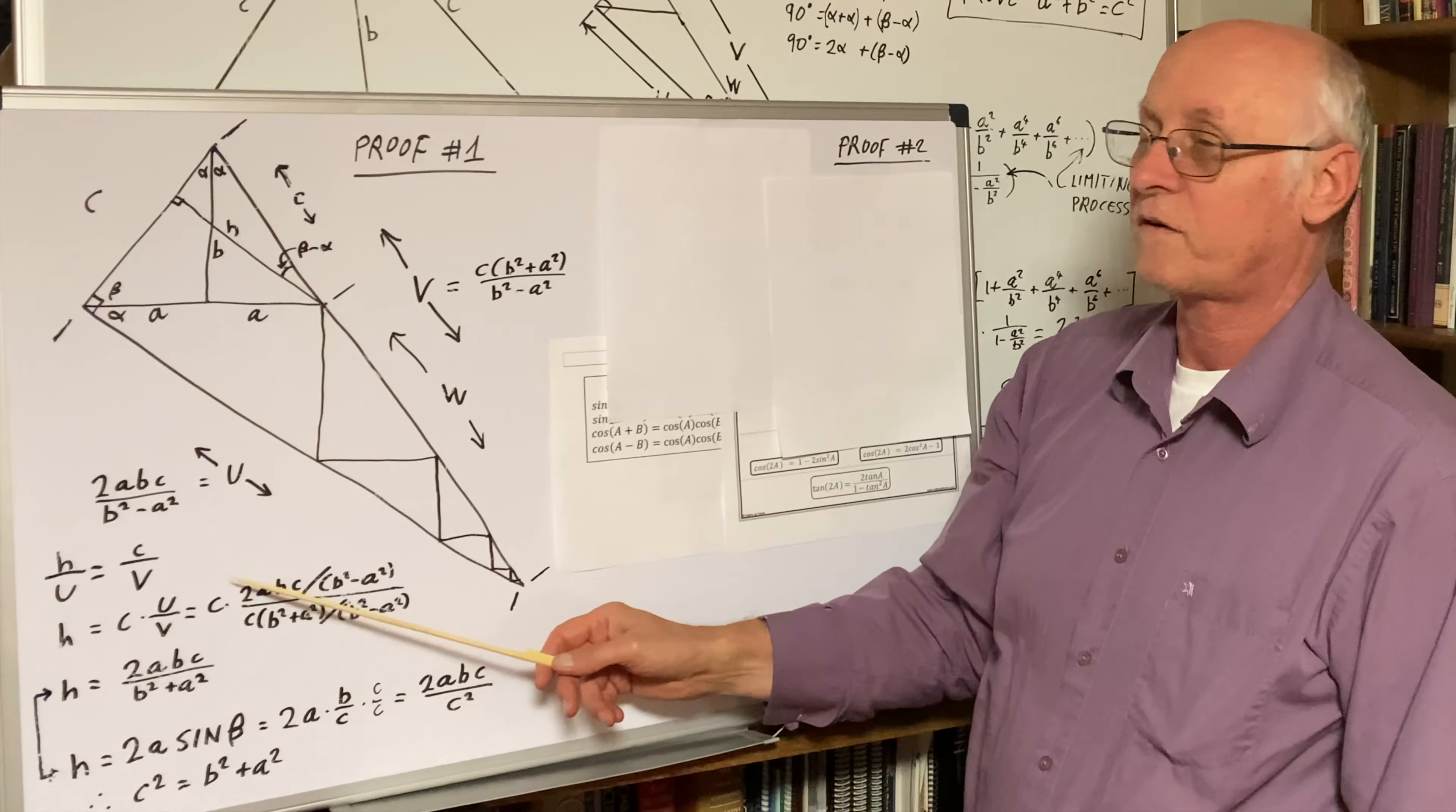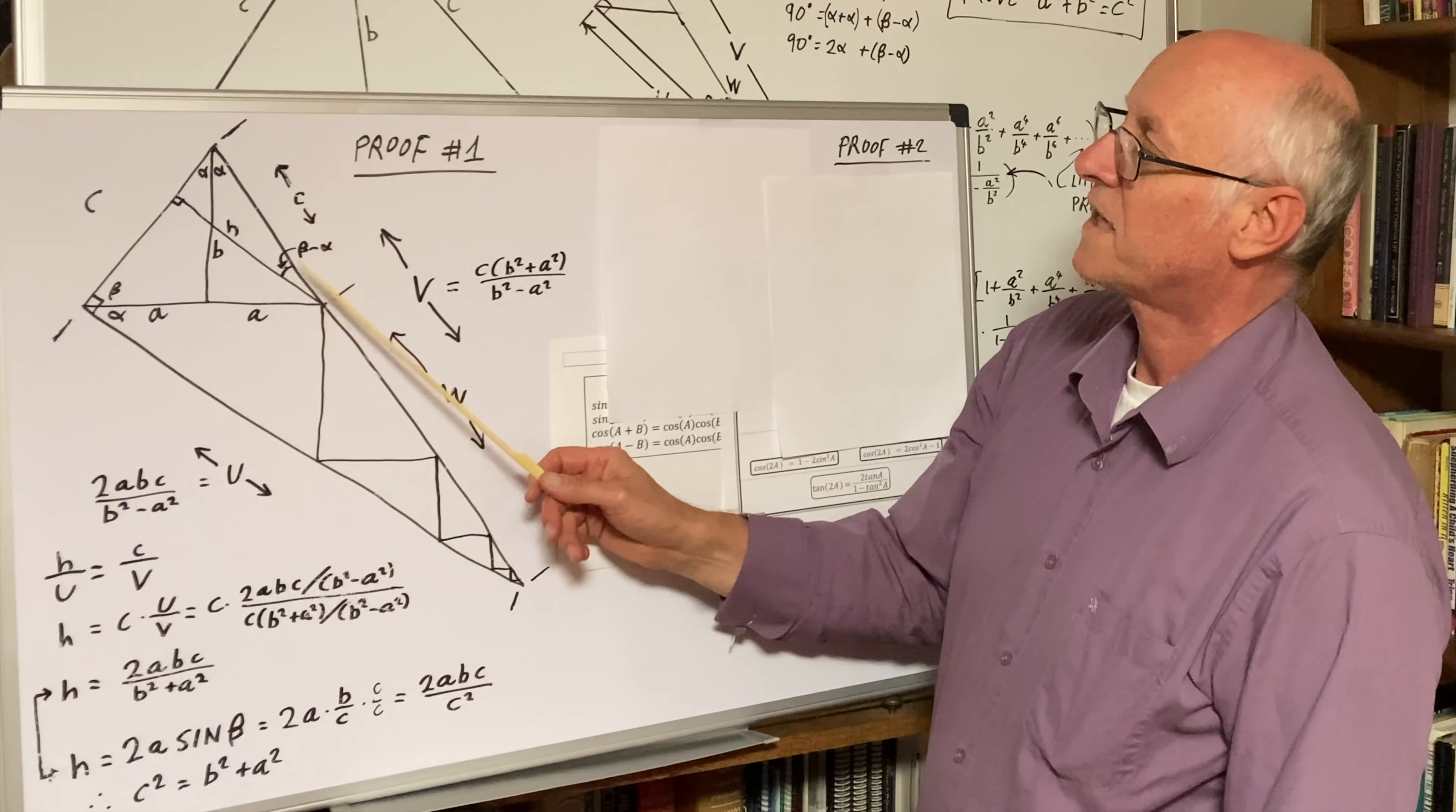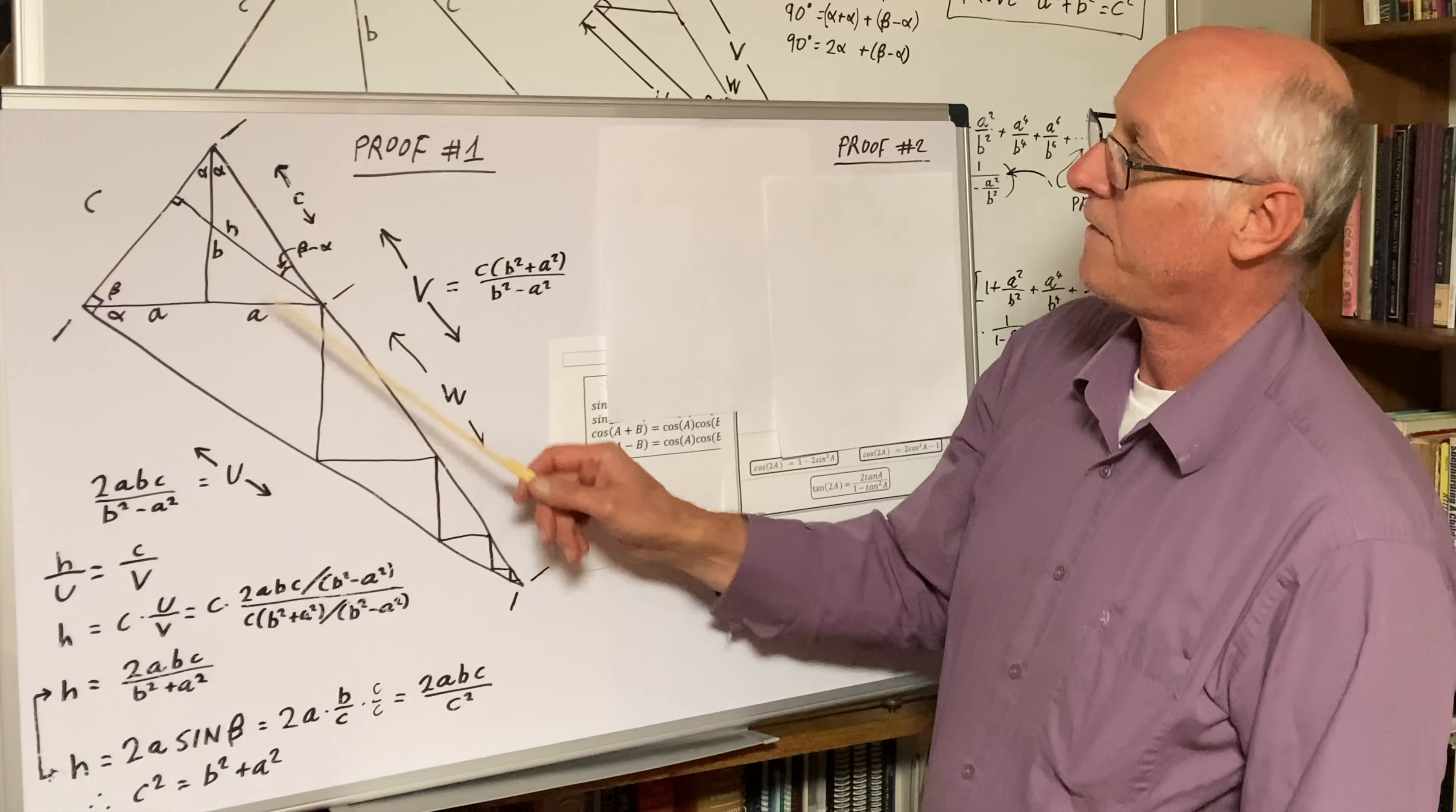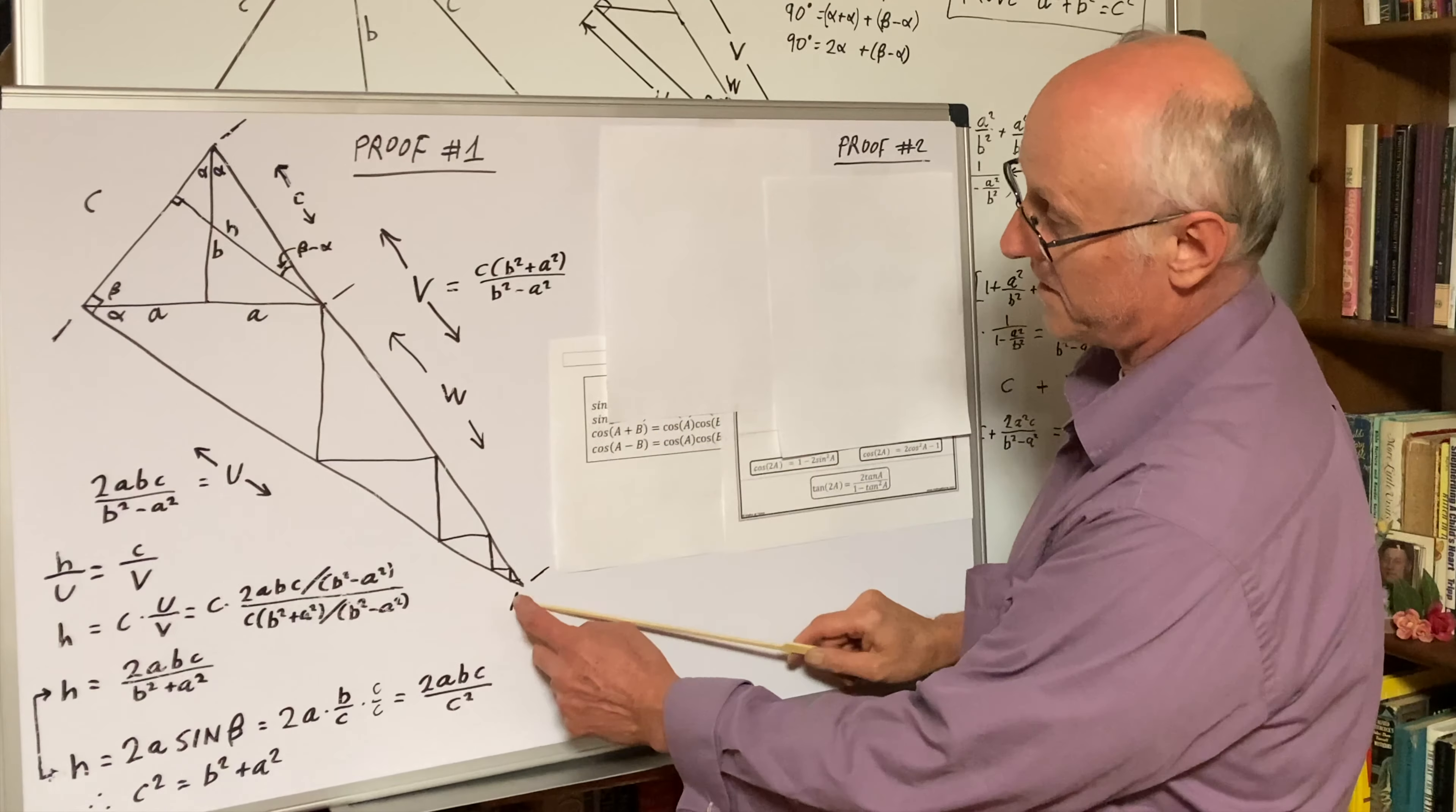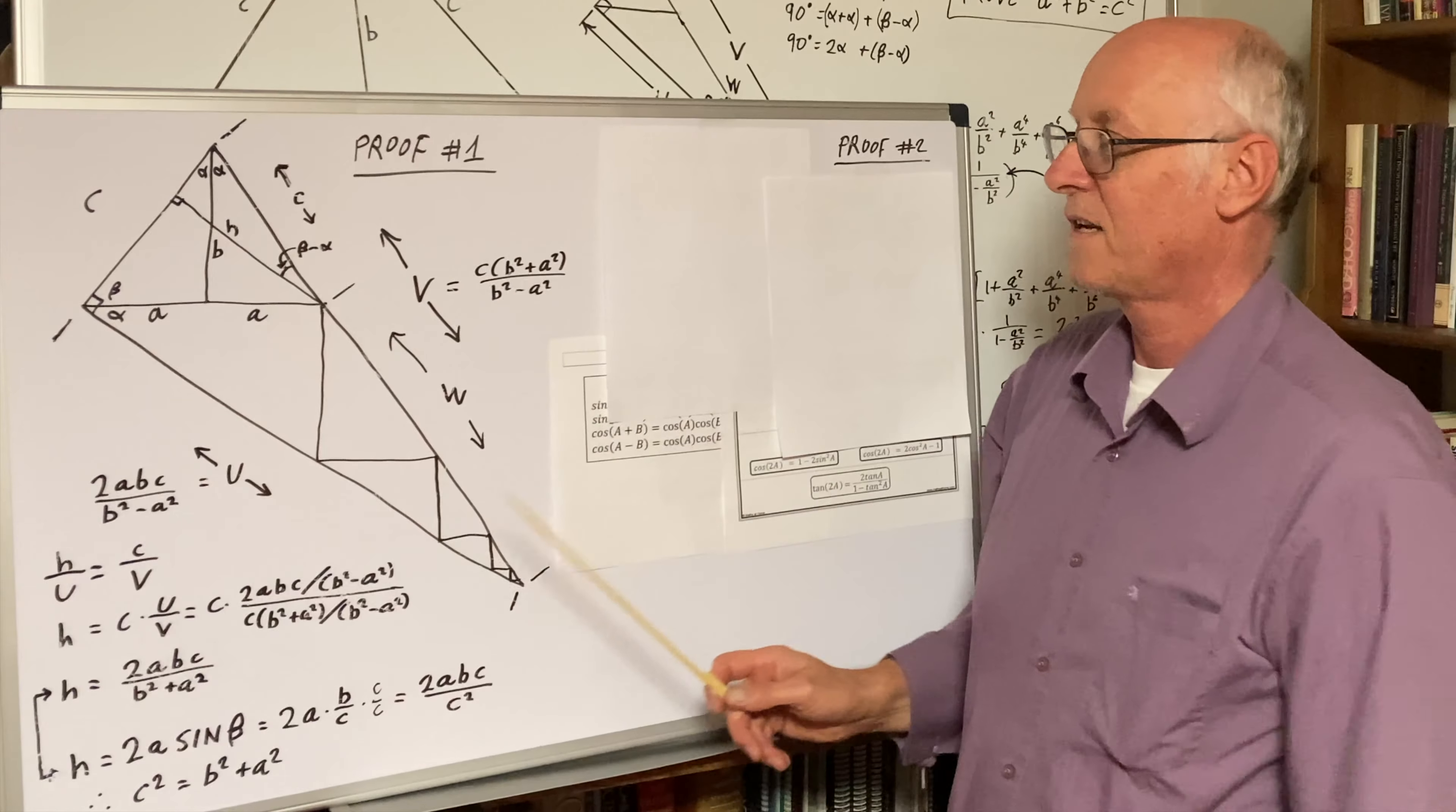Of course, U over V is nothing more than the cosine of beta minus alpha, adjacent over hypotenuse. So crank that through.